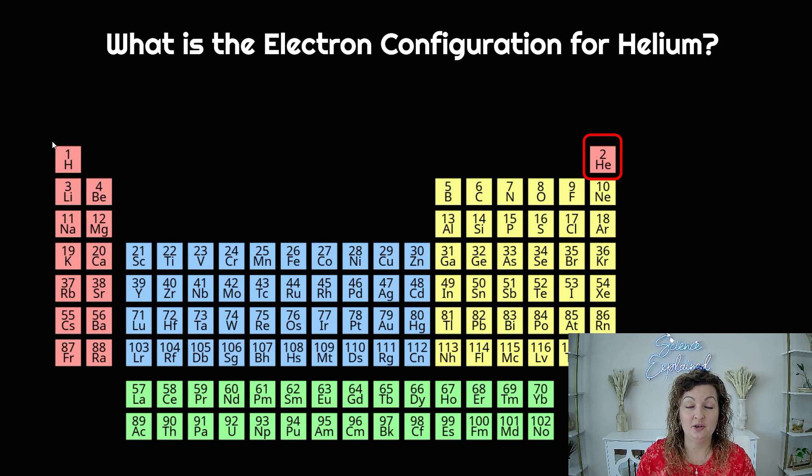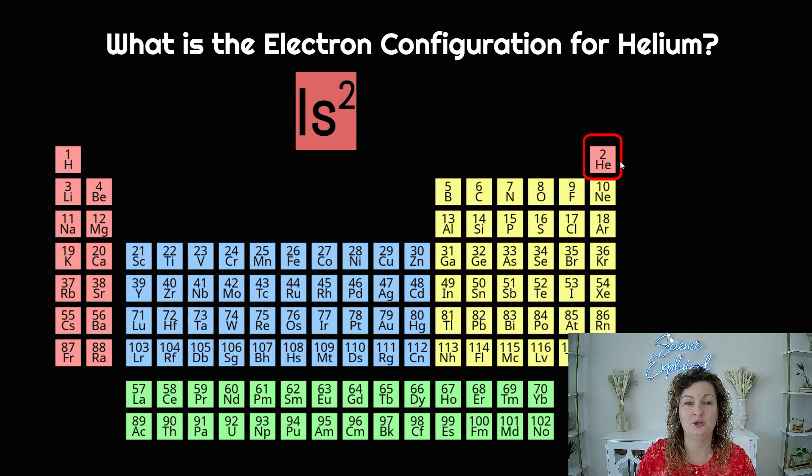So we are in row 1 or period 1, so you're going to start off with a 1. And you are going over one, two, so it's going to be 1 because you're in the first row, S because you're in the S block, and 2 because it has 2 electrons or 2 over. Hope this was helpful, bye guys!